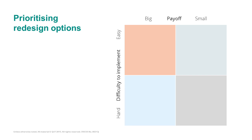There are redesign options that have a large payoff and are easy to implement, and we call these the 'implement' redesign options. These are the things we should consider first as a priority — in other words, the low-hanging fruit.